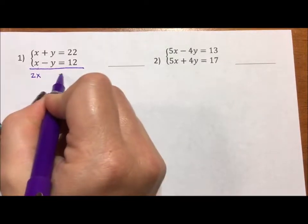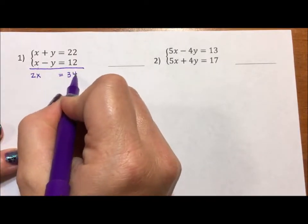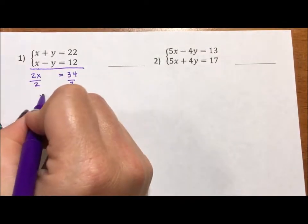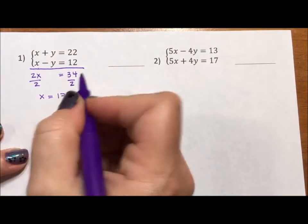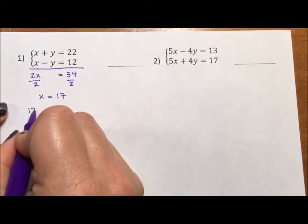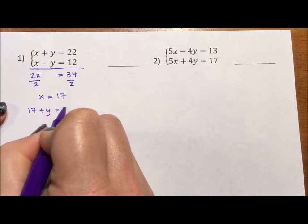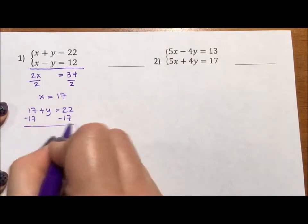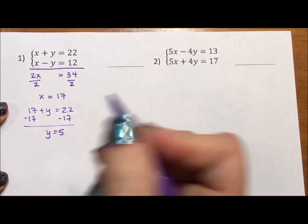I get 2x equals 34, and when I divide by 2, I get that x is equal to 17. So now I need to figure out y. 17 plus y equals 22. If we subtract 17 from both sides, we get that y is equal to 5. So now we have this answer, 17 comma 5, but I could have made a mistake.